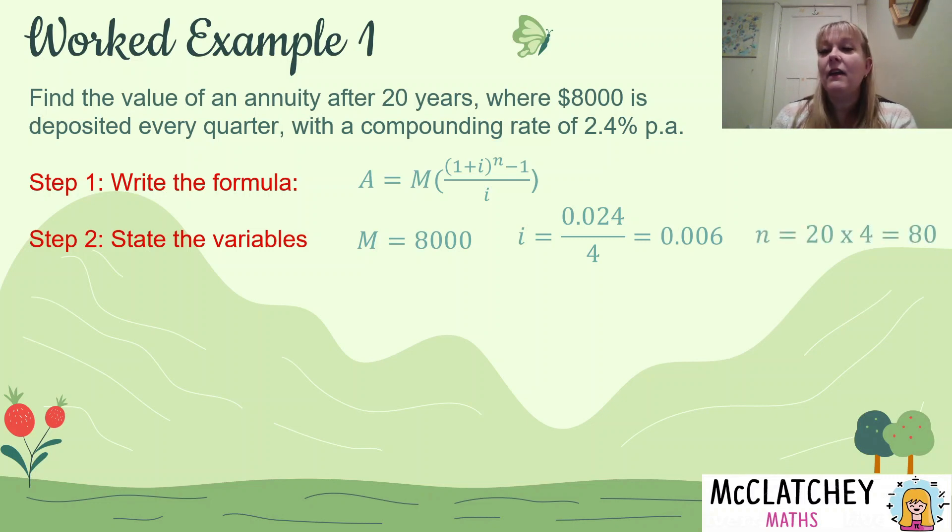Then we have our N value, which is the number of years, 20 years, 4 compounding periods per year, because it's 4 quarters in one year, which gives us 80 as our value for N. Now that we've stated our variables, we usually actually are awarded marks for finding i and N correctly. So that's why it's always a good idea to work on that first. And pretty much every compound interest question you're going to have, you're going to have to convert i and N. So get into the habit of it.